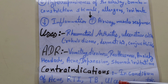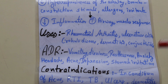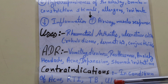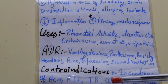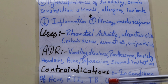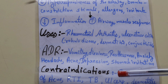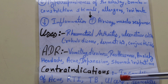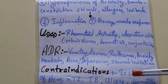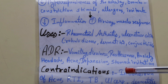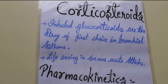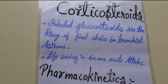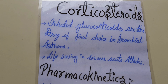Contraindications include conditions such as respiratory tract infection (RTI), tuberculosis (TB), ulcers, and dermatitis. These conditions are contraindicated for corticosteroid use.